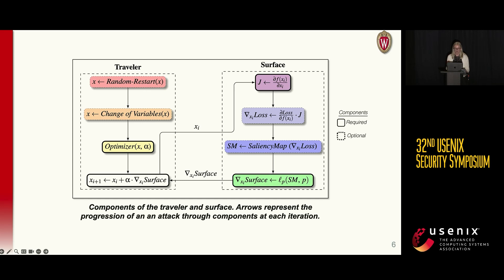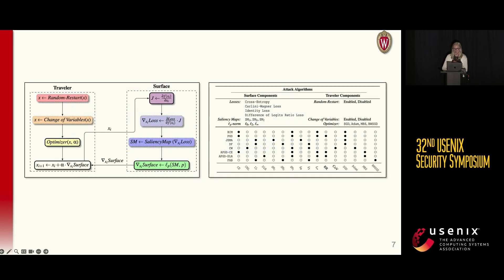In a little bit, I'll discuss more about what we actually do with this decomposition and some of the key properties that we get from it. But for now, I'll just run through a quick example of how this decomposition actually works. I'll show you how PGD and DeepFool, two popular attacks that are very different, are defined under this framework. Throughout this example, I'll leave up these two figures here. On the left, we have our decomposition chart. And on the right, we have a chart that contains a row for each attack that we looked at in this work for the purposes of creating our decomposition. Each column is a different component choice identified through our decomposition, and the filled-in bubbles represent the fact that that attack uses that component choice.